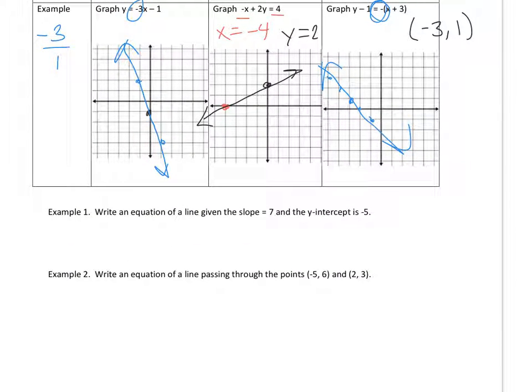Example 1, write an equation of a line given the slope and the Y-intercept. This is, we can use Y equals MX plus B, because we know the slope and the Y-intercept. So my equation is going to be Y equals 7X minus 5.